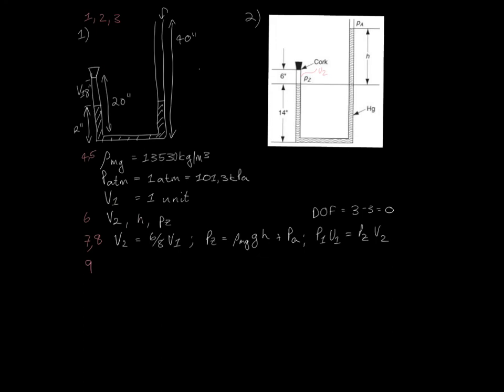Now we are ready to solve the equations. We can eliminate V2 by substituting into that equation and we can eliminate P2 by substituting here. After a little bit of manipulation we end up with a final solution for H. And when we plug all the values in remembering to state the atmospheric pressure here in pascals to keep the dimensions consistent we end up with H of 0.25 meters which is equal to 10 inches.